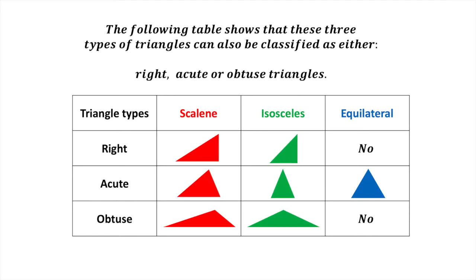In the third column, an equilateral triangle can only be an acute triangle. That's because an equilateral triangle has three angles of 60 degrees.